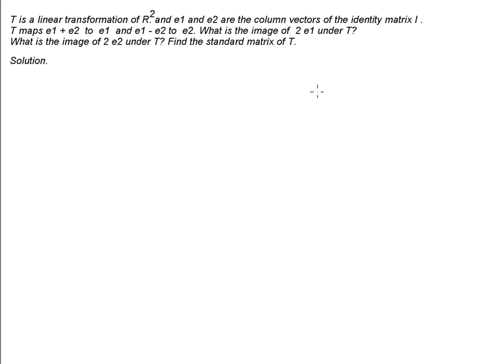We know the image of E1 plus E2 is E1, and we also know the image of E1 minus E2 is E2. So what is the image of twice E1 under T, and what is the image of twice E2 under T?